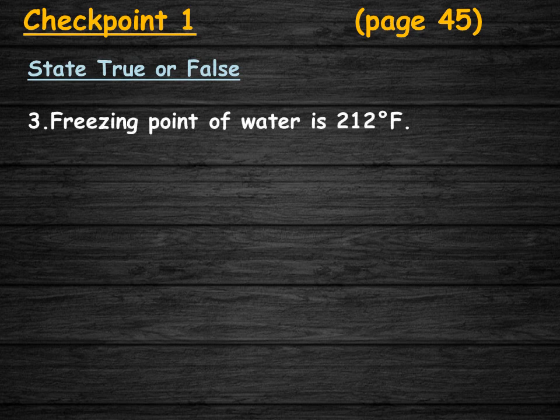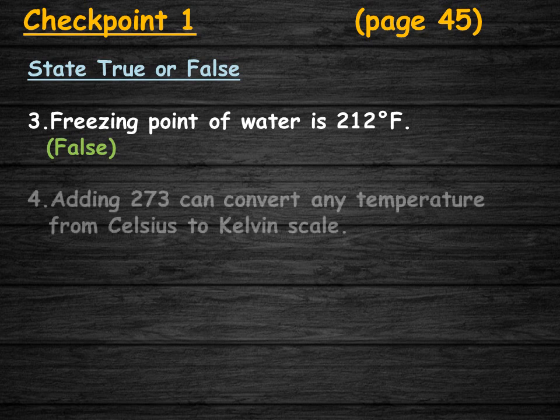Freezing point of water is 212 degree Fahrenheit — the freezing point of water on the Fahrenheit scale is 32 degree Fahrenheit, so this statement is false. Adding 273 can convert any temperature from Celsius to Kelvin scale — this statement is true.